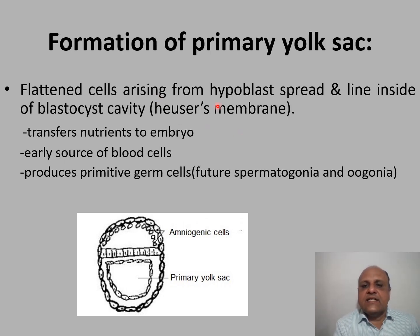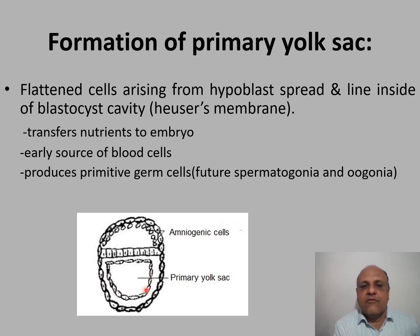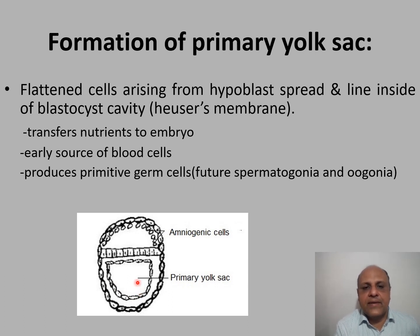Flattened cells arising from the hypoblast spread and line the inner aspect of the blastocyst cavity — this is referred to as Heuser's membrane. This forms the primary yolk sac. The functions of the primary yolk sac are: it transfers nutrients to the embryo, it is the early source of blood cells, and it produces primitive germ cells which give rise to future spermatogonia and oogonia.